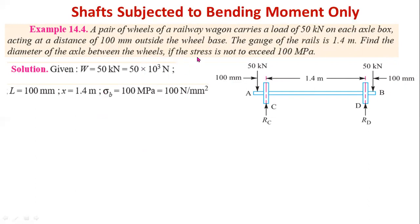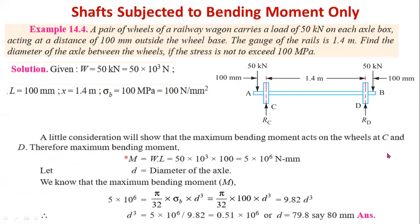From the given question, the maximum bending stress σ_B = 100 MPa (where 1 MPa = 1 N/mm²). From the diagram, you can observe the maximum bending moment acts at point C or at point D — the wheel positions. You have to determine the maximum bending moment at point C or D.